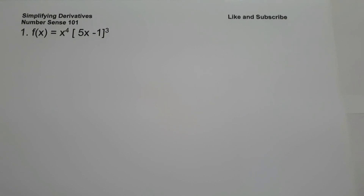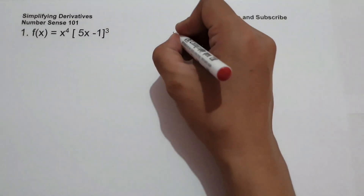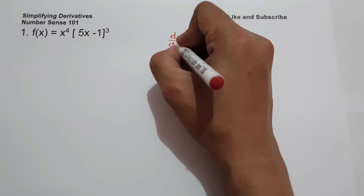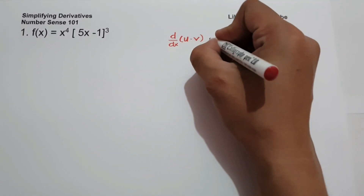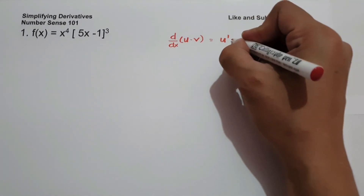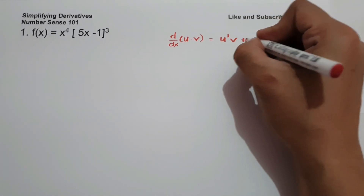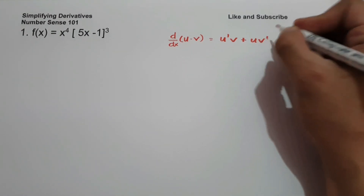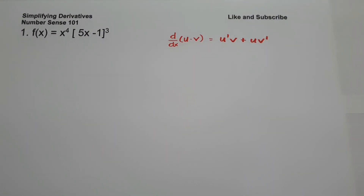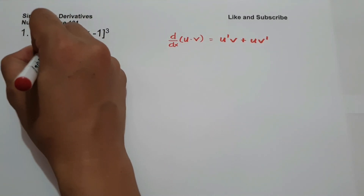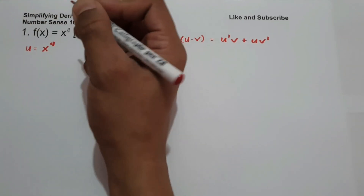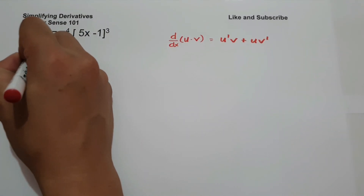What is the derivative of x raised to 4 times 5x minus 1 raised to 3? For this problem, we are going to use product rule. So let us have the derivative of u times v, which is u' times v plus u multiplied by v'.